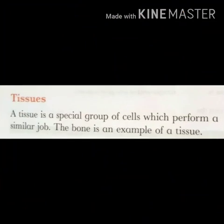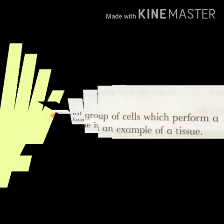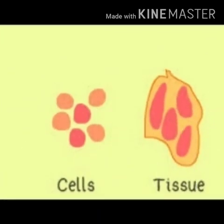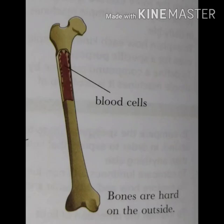A tissue is a special group of cells which perform a similar job. The bone is an example of a tissue. Tissue cells کا special group ہوتا ہے — similar cells مل کر tissue بناتے ہیں اور tissues ایک particular job perform کرتے ہیں۔ Inside each bone millions of living cells پائے جاتے ہیں، اور یہاں blood cells اس diagram میں shown ہیں۔